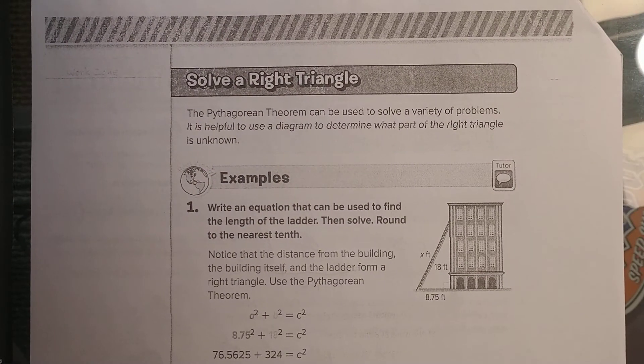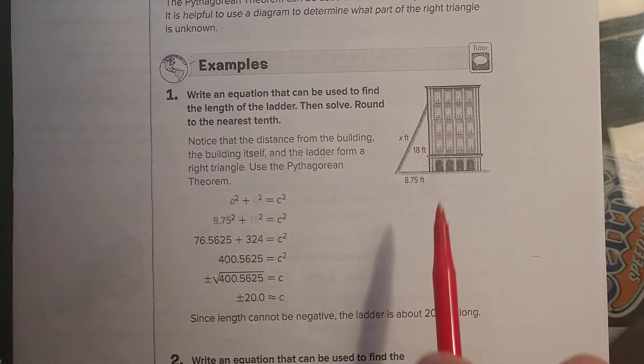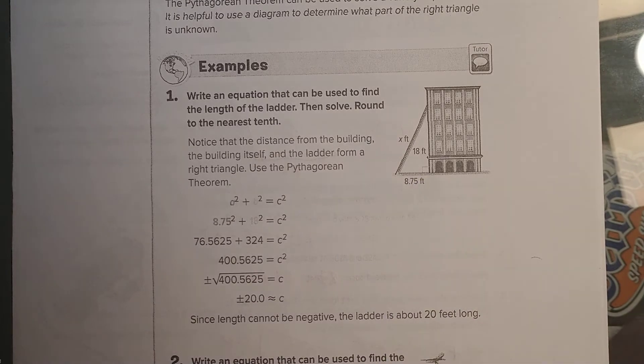The Pythagorean theorem can be used to solve a variety of problems. It is helpful to use a diagram to determine which part of the right triangle is unknown. Remember, Pythagorean theorem only applies to right triangles, and right triangles do appear a lot in the world.